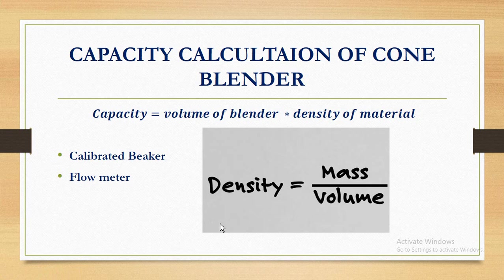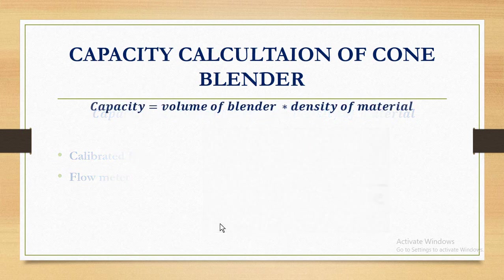Number one, you can take any calibrated drum — for example, 50 liters — and fill the blender using that drum. If you use 2 drums, it means 100 liters; 4 drums means 200 liters. You can also use a flow meter. Or you can try filling it and then fix the measured value.